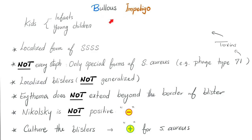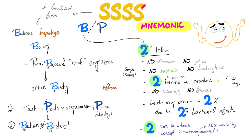Here is a mnemonic about bullous impetigo — the B.E.E.N. mnemonic. Bullous impetigo is not caused by all staph species — only special forms of Staph aureus, such as phage type 71, because this is the one that produces the exfoliative toxin. Bullous impetigo is usually Not generalized, as compared to Stevens-Johnson syndrome or Toxic Epidermal Necrolysis. Erythema does Not extend beyond the border of the blister. Nikolsky sign is Not positive. If you culture that blister, you will find Staph aureus — but remember, the disease is caused by the toxins secreted from the staph, not the staph body itself.